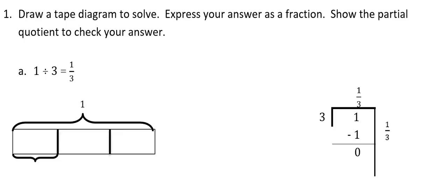This tutorial is for 5th grade, Module 4, Lesson 4. In this lesson, we're going to continue to look at the quotient, or the answer to a division problem, when the dividend, the number we're starting with, is smaller than the divisor, the number we're going to divide it by. We're also going to relate that to the forgiving method of division.